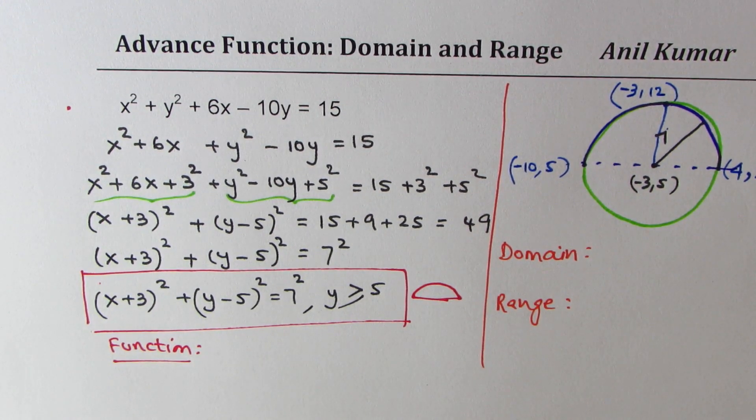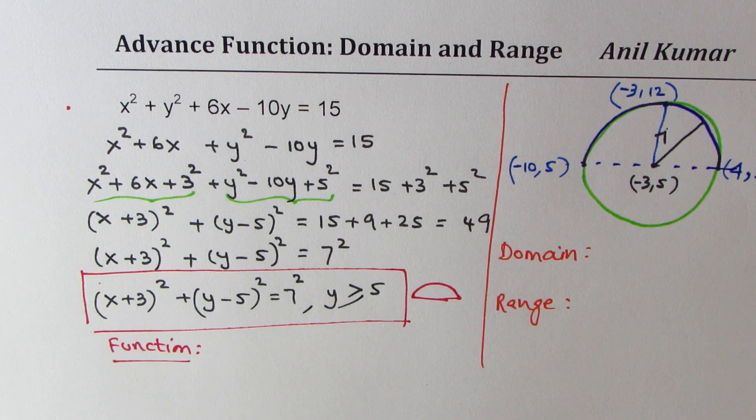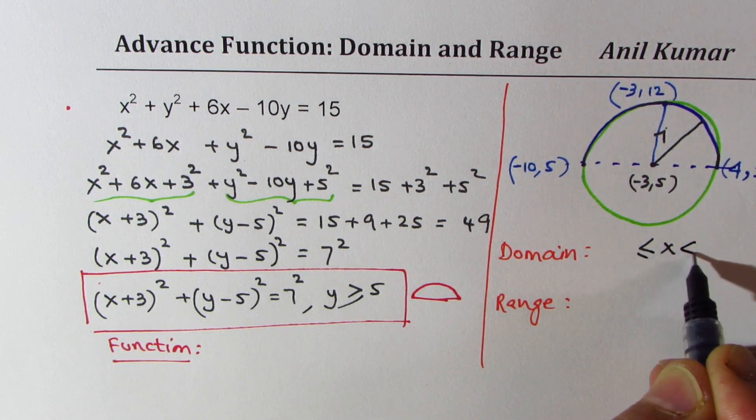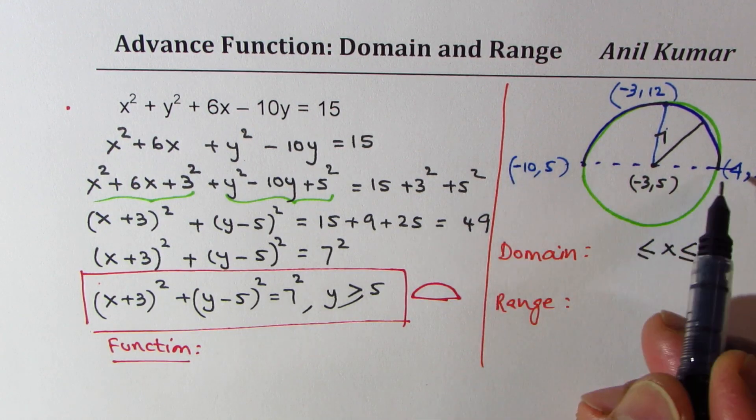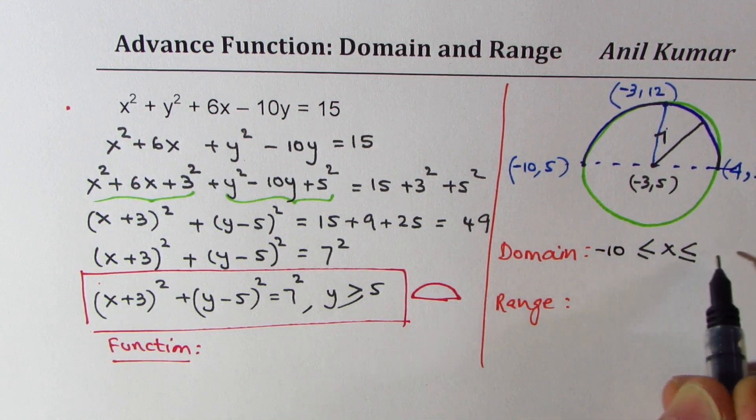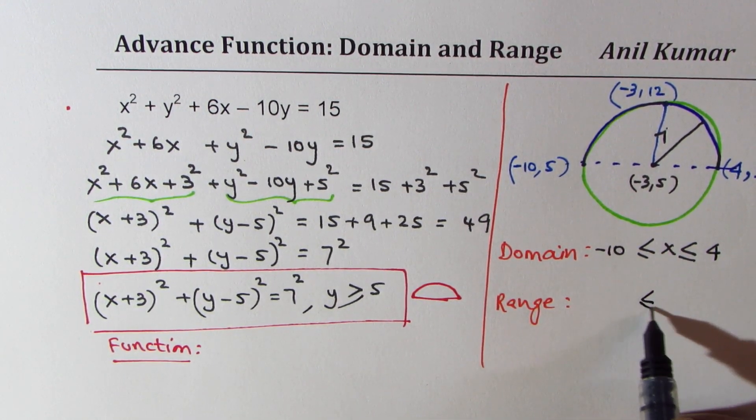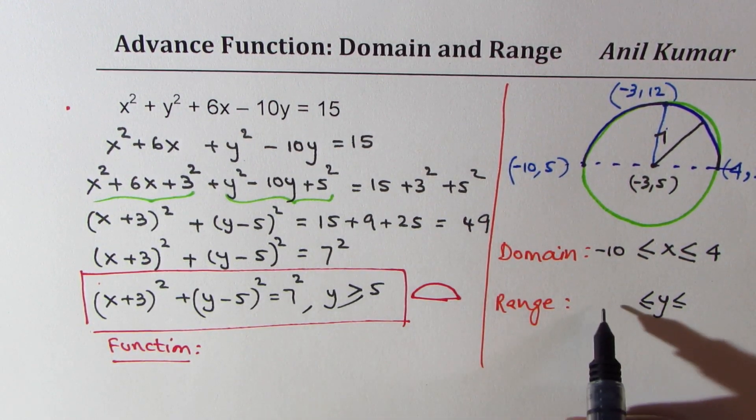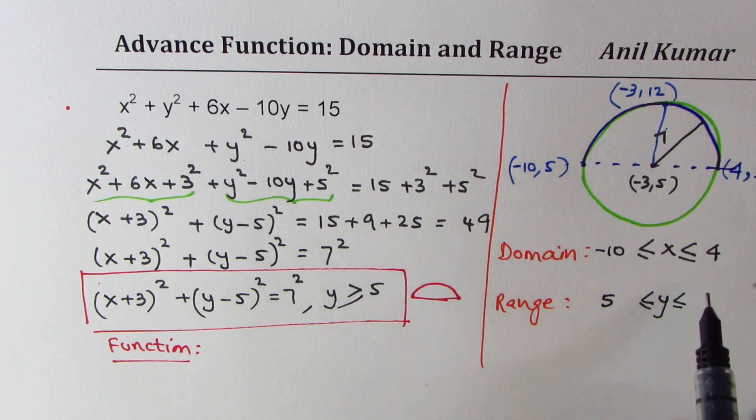Now from here you can easily write domain and range. So domain is that the x value should be between minus 10 and 4, and the range is that y value should be greater than 5 as we define but less than equal to 12.